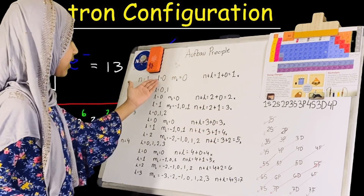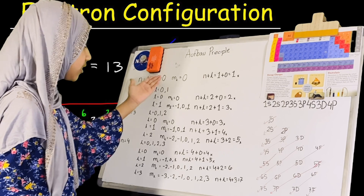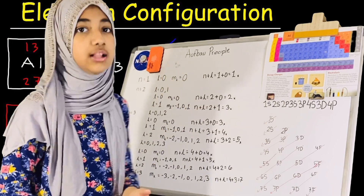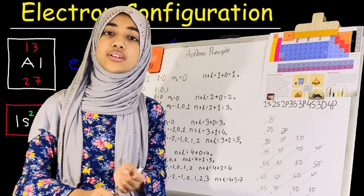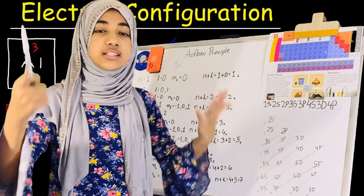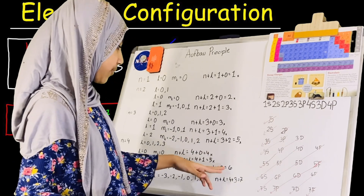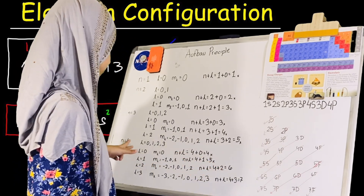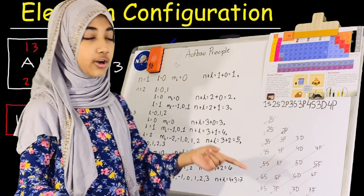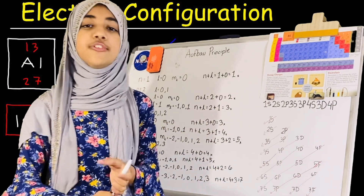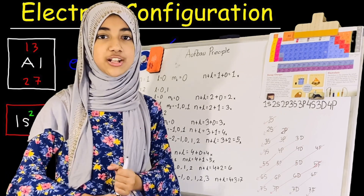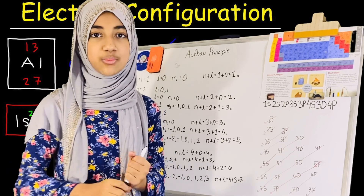So follow this method, figure out the l, n plus l, and ml values, and that will prove the electron configuration order for all periods. Thanks for watching, and Assalamualaikum.